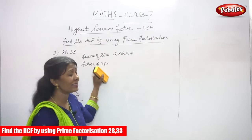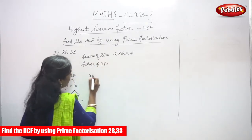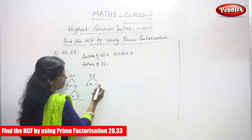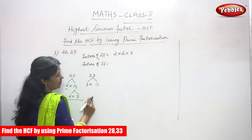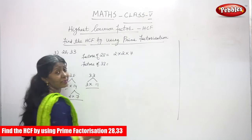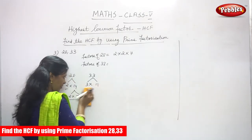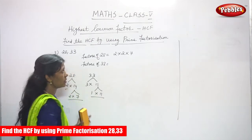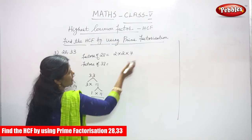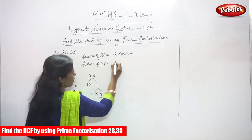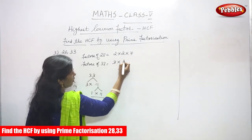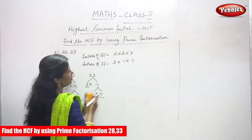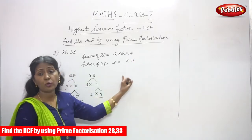Next, factors of 33. Find the factor: 3 into 11 you can get 33. This is the only factor — you can't get more than that. If you take 11, you will write only 1 into 11. So the factor of 33 is 3 into 11.